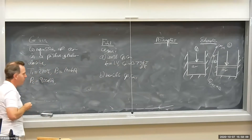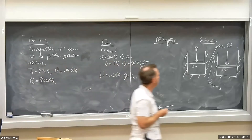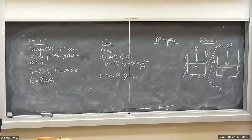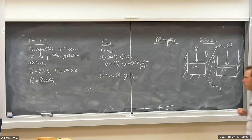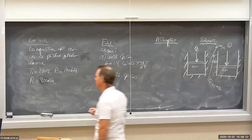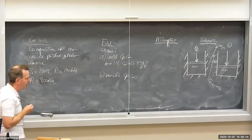We do boundary work on the system and compress the air, raising the pressure, raising the temperature. The final pressure P2 is 800 kPa.